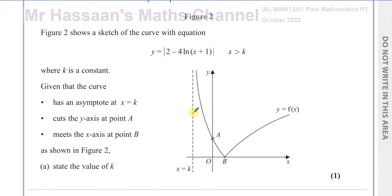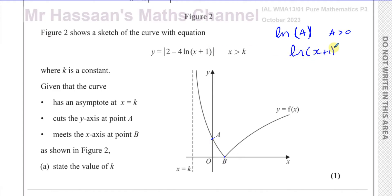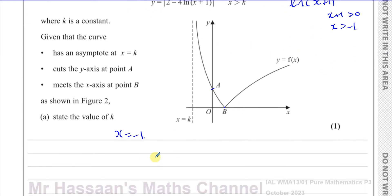It meets the x-axis at point B, as shown in figure 2. First of all, state the value of k. Now k is the asymptote, which is the line the curve can never touch. We know that you can never have a negative value inside the ln function. So if you have ln of something, that thing must be greater than 0. Here we have ln of (x plus 1), so x plus 1 must be greater than 0, meaning x must be greater than minus 1. So the asymptote is x equals negative 1. If you put negative 1 in, this becomes undefined because you have ln of 0. So x equals negative 1.